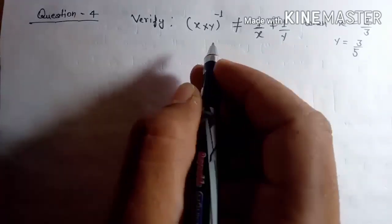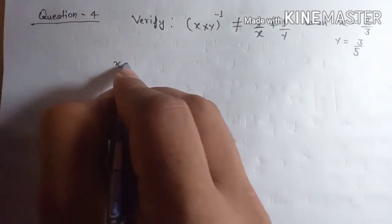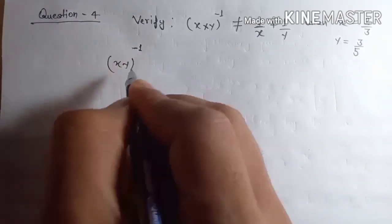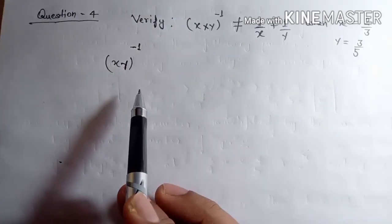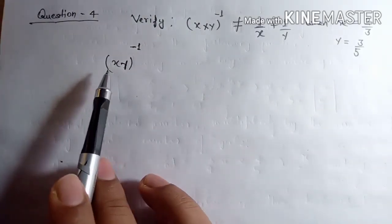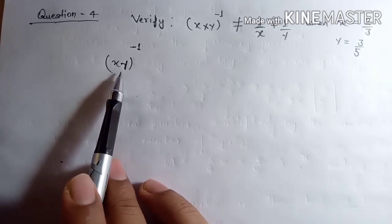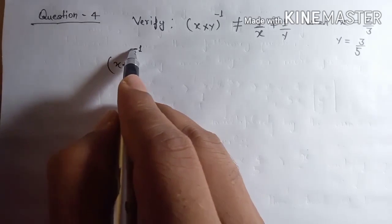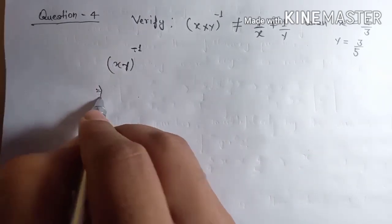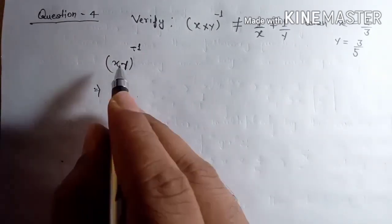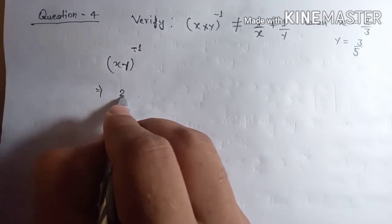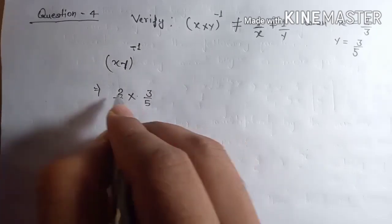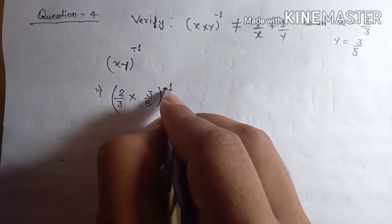The left hand side is x into y to the power minus 1. If you do not see a multiplication sign and two different variables are given, it means they are multiplying. Now put here the value of x, that is 2 upon 3, and y is 3 upon 5, and the power is still minus 1.